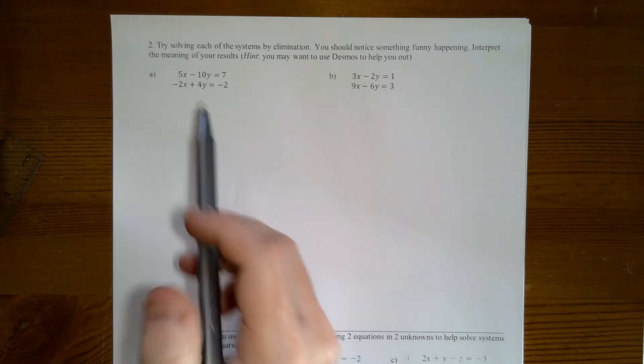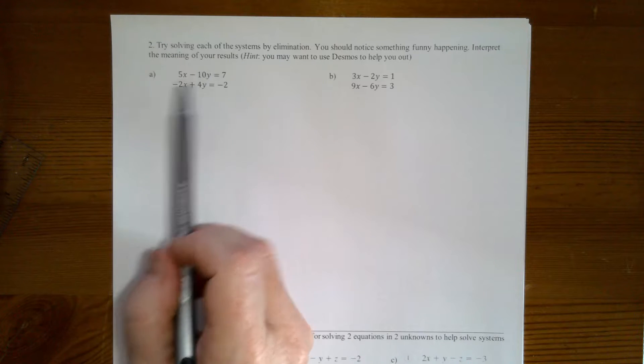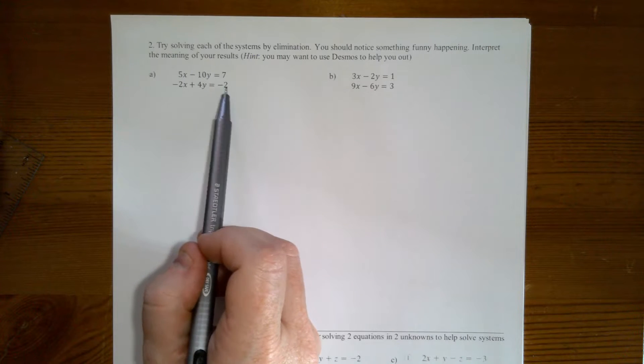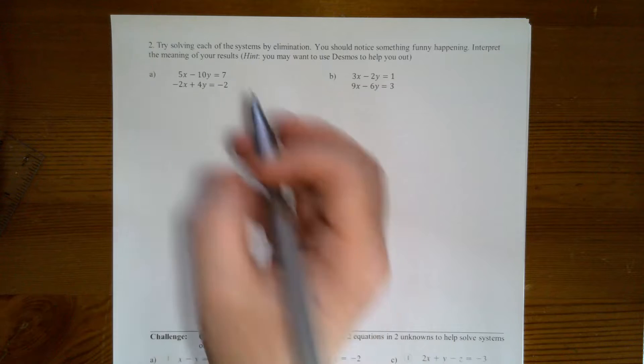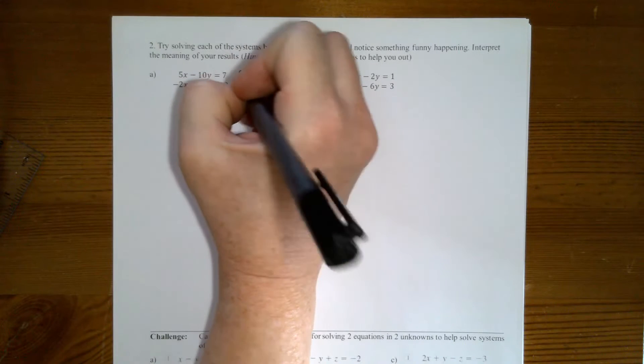We want to solve by elimination. So we have 5x minus 10y equals 7 and negative 2x plus 4y equals negative 2. I'm going to go ahead and label these 1 and 2.